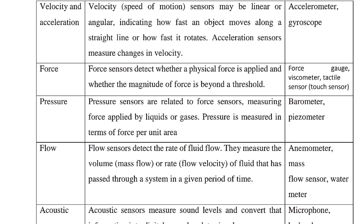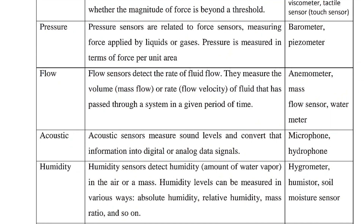Pressure is measured in terms of force per unit. Flow sensors detect the flow of fluids. They measure the volume, mass flow, flow velocity, or rate of fluids that pass through a system in a given period of time. Examples include the anemometer, mass flow sensor, and water meter.